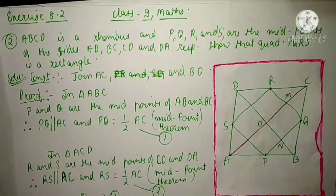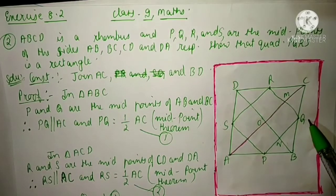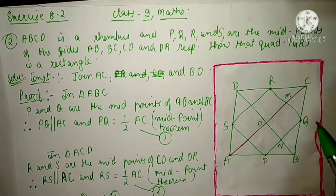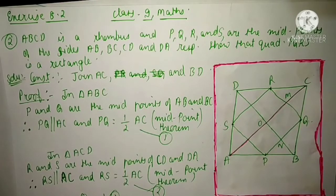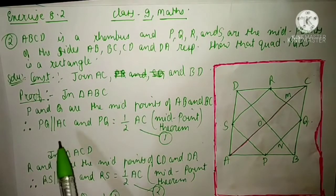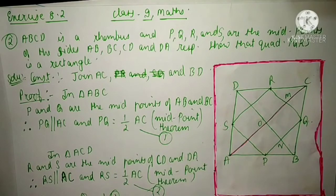Now see the proof. In triangle ABC, P is the midpoint and Q is also the midpoint of AB and BC respectively. That means PQ will be parallel to AC and PQ will be half of AC, by the midpoint theorem. So we will write: P and Q are the midpoints of AB and BC. Therefore, PQ is parallel to AC and PQ equals half of AC. Reason: midpoint theorem. Name this as equation number 1.